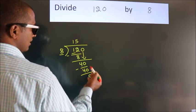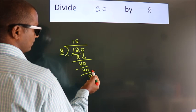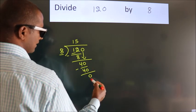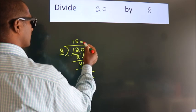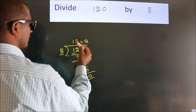After this, no more numbers to bring down. And we got remainder 0. So this is our quotient. We got 15. Let's start.